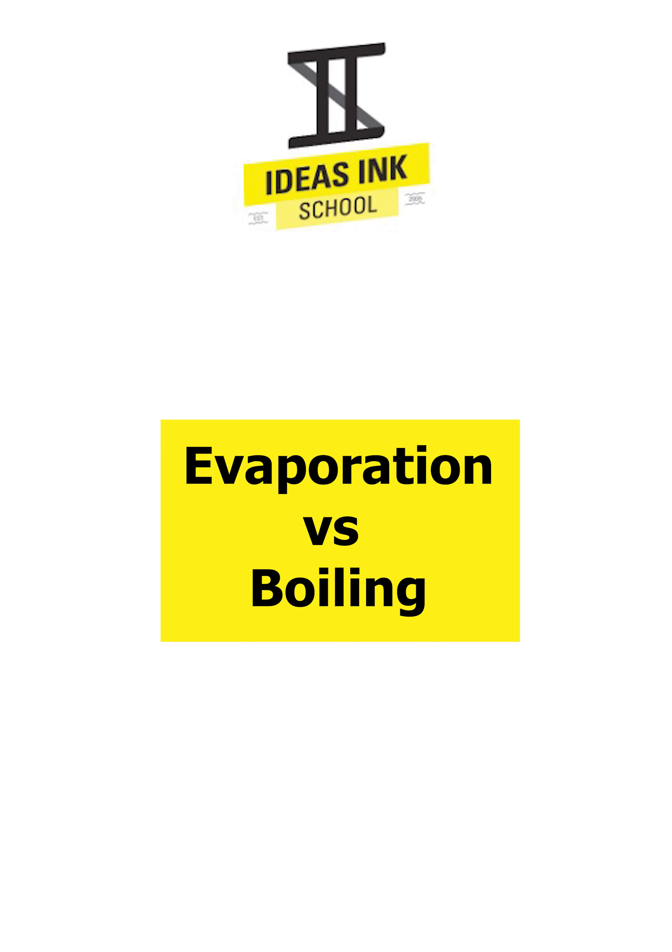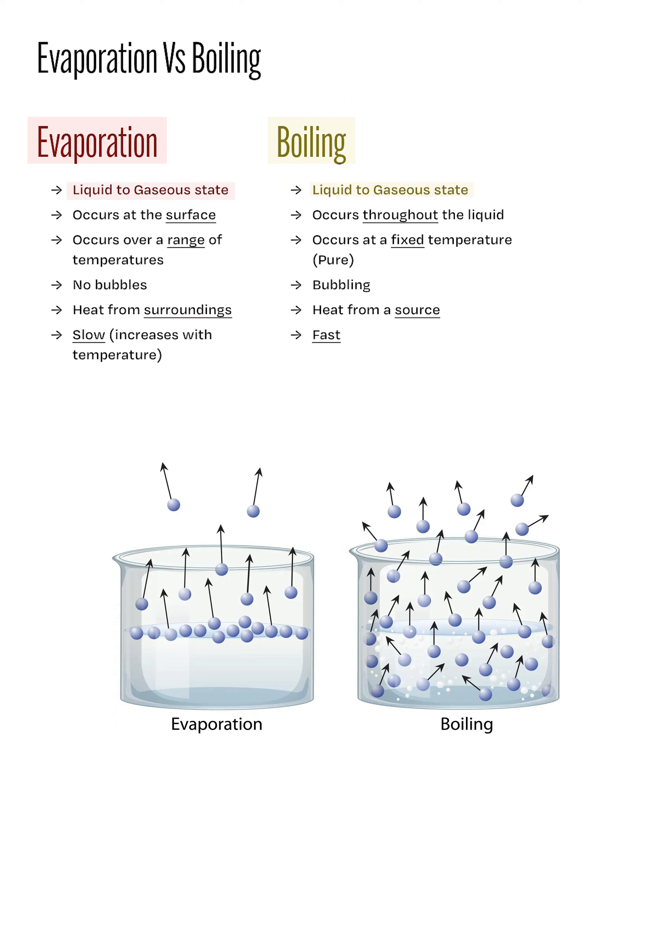Next, we will be comparing between the evaporation and boiling process. Both processes involve the change of state from liquid to gas. However, evaporation occurs only at the surface while boiling occurs throughout the liquid. Evaporation occurs over a range of temperatures while the boiling point of a pure substance occurs at a fixed temperature. During evaporation, no bubbles can be observed but boiling a liquid produces bubbles. The source of heat for evaporation comes from the surroundings but boiling draws heat from sources like a kitchen stove or a Bunsen burner.